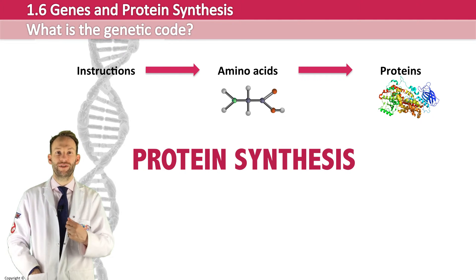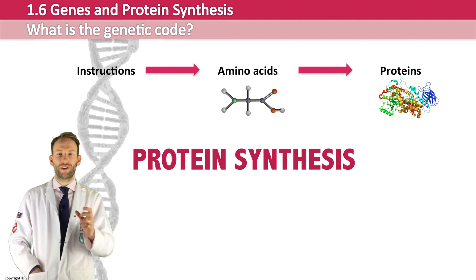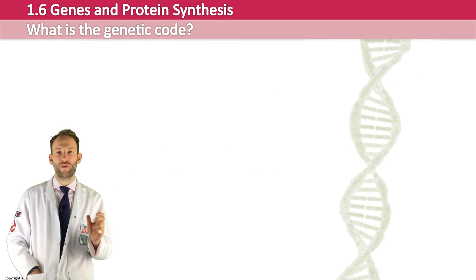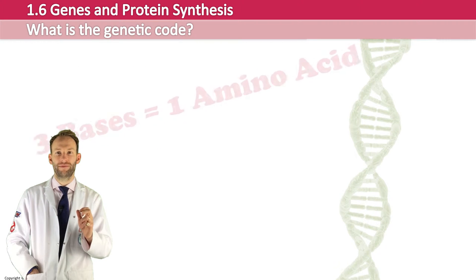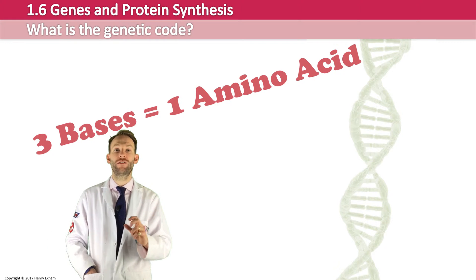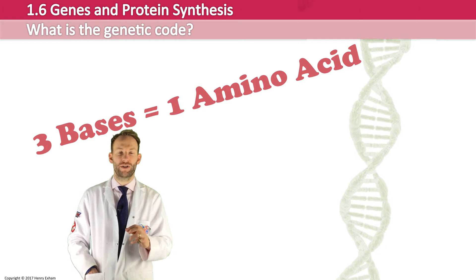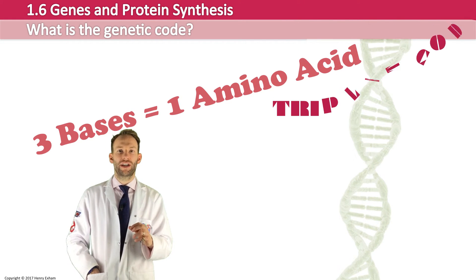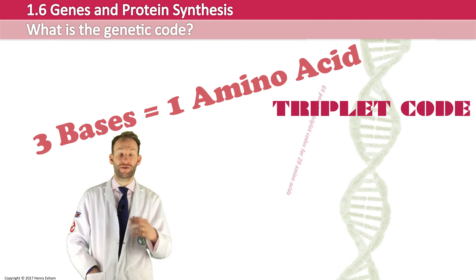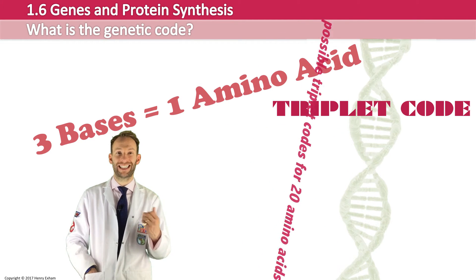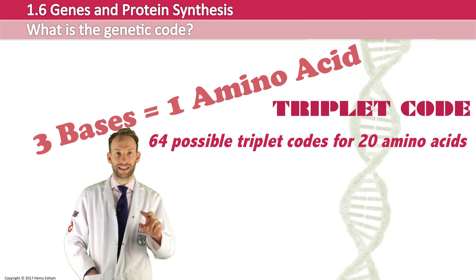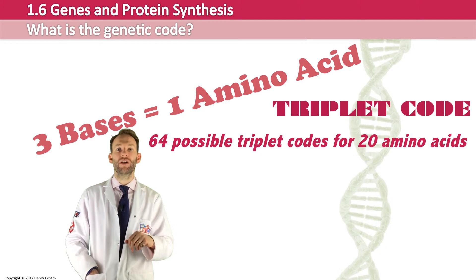So how does it work? Every three bases on the DNA code equates to one amino acid — this is the code for one amino acid. We call this the triplet code. There are actually 64 combinations of bases, because remember we've got four bases — A, T, C, and G — so it's four to the power of three, because we read three at a time.